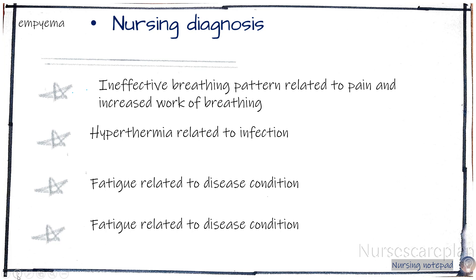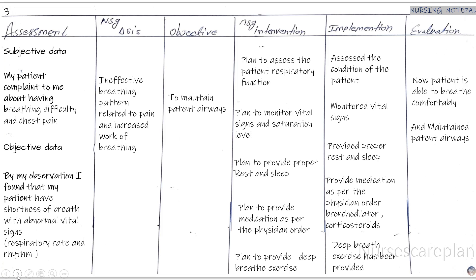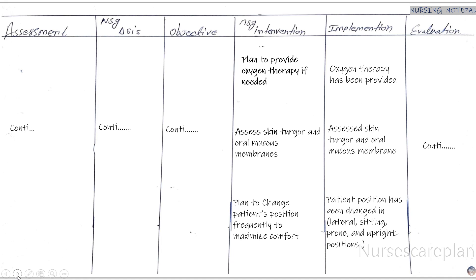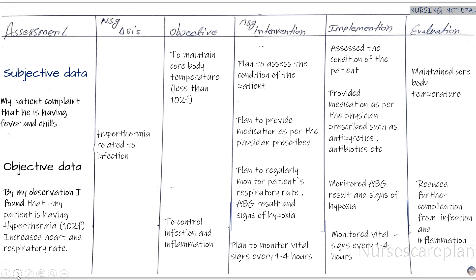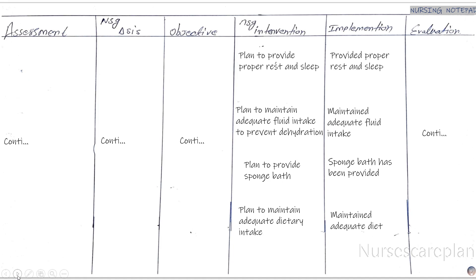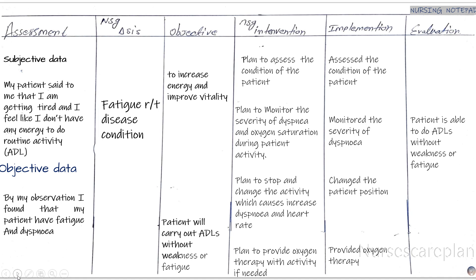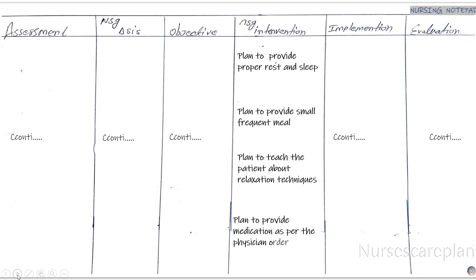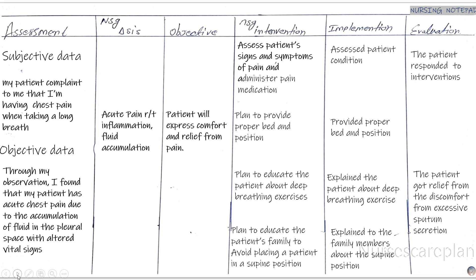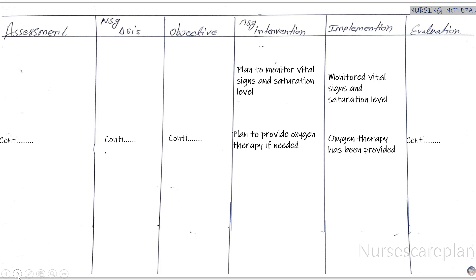In this video I'm going to share with you nursing diagnosis and care plan for a condition called empyema. Empyema is a condition where there is pus collection in the pleural space in the lung, due to lung infection like pneumonia or tuberculosis. It is a complication developed in patients who suffered from pneumonia or tuberculosis. My name is Jitain and welcome to your nurse's care plan.